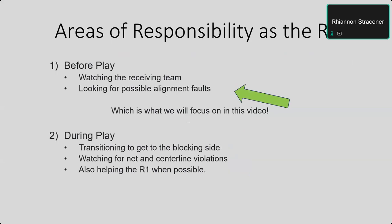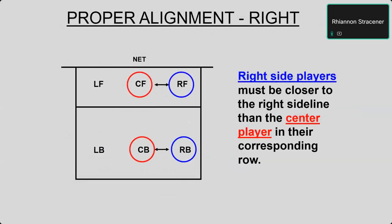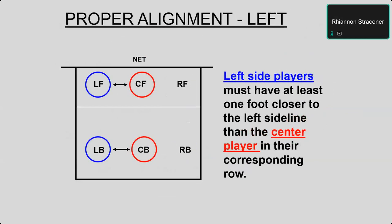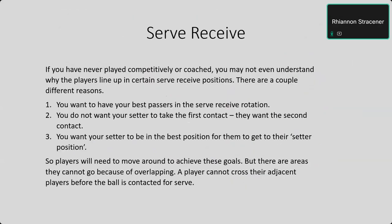Today we are going to focus on before play. The second referee is responsible for seeing the receiving team and making sure they are in the correct order. Alignment faults occur between adjacent players — side to side and front to back. Right side players must be closer to the right sideline than the center player in their corresponding row, and front row players must have at least one foot closer to the centerline than their corresponding back row player. As the R2, you are looking at the receiving team to figure out: are they out of alignment? Is somebody overlapping?